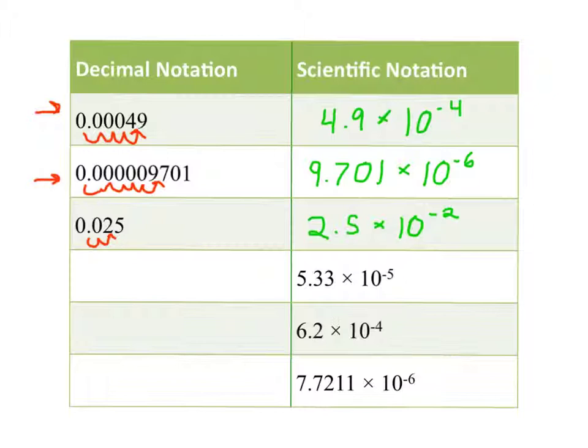To go from scientific notation into decimal notation, I'll hop my decimal place over the number of spots indicated by the exponent. Be careful about the direction. We need to end up with a number less than 1, so our decimal place needs to hop over to the left. In this case, 5 spots.